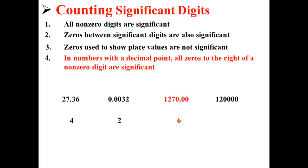The number 1270.00 has six significant digits. That is because, in numbers with a decimal point, all zeros to the right of a non-zero digit are significant.